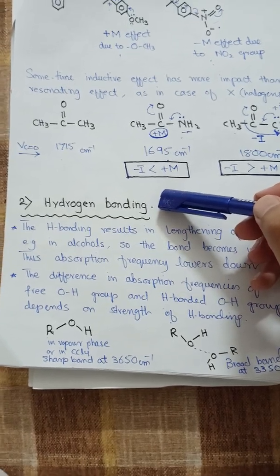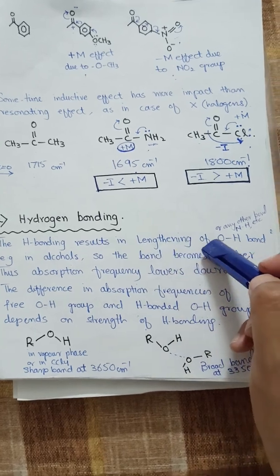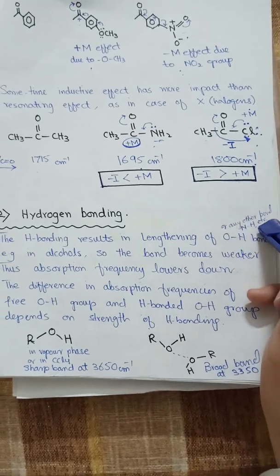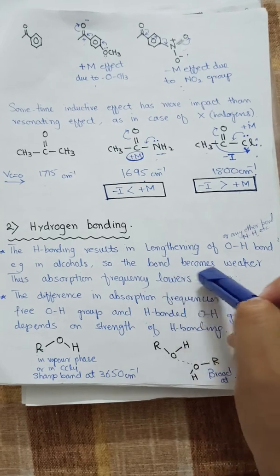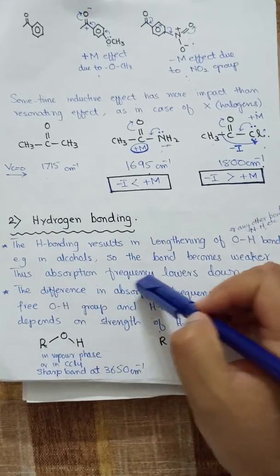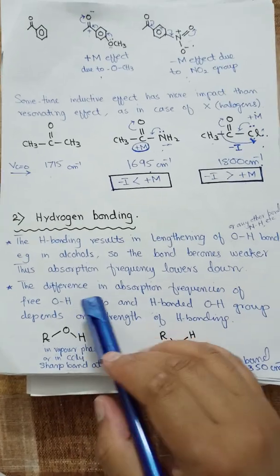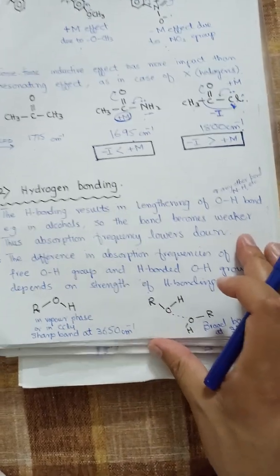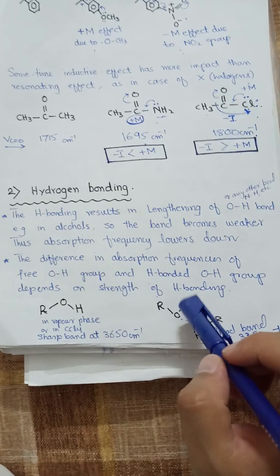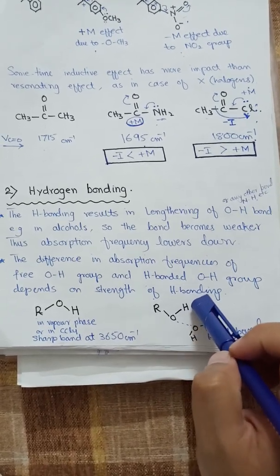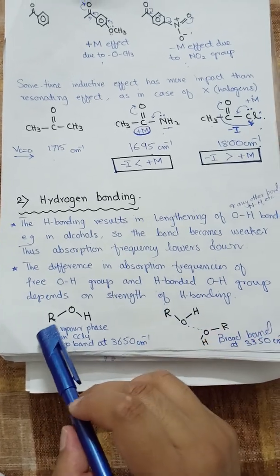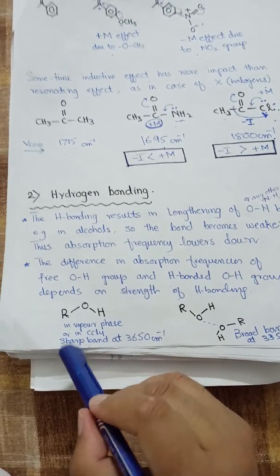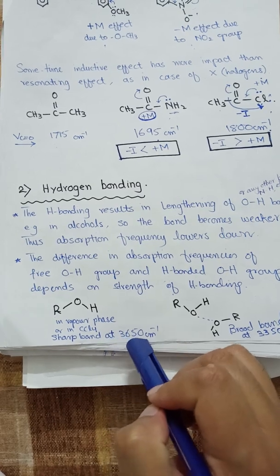The second factor we are going to discuss is hydrogen bonding. Hydrogen bonding results in the lengthening of the O-H bond in alcohols or the N-H bond in alkylamines. The bond becomes weaker, and thus the absorption frequency is lowered. The difference in absorption frequencies between the free hydroxyl group and the hydrogen-bonded hydroxyl group depends on the strength of the hydrogen bonding. We will take the example of a free alcohol in vapor phase or in carbon tetrachloride, which gives a sharp band at 3650 cm⁻¹.